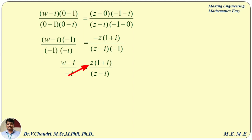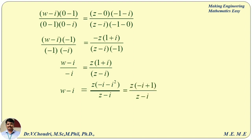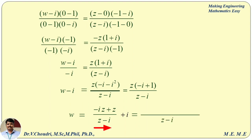We bring minus i to the right-hand side. Therefore the right-hand side becomes z times (minus i minus i squared) divided by (z minus i). Here, minus i squared equals plus 1. From the left-hand side, minus i brings to the right-hand side as plus i. Now taking the LCM, which is z minus i, the numerator becomes minus i times z, plus z plus zi minus i squared.